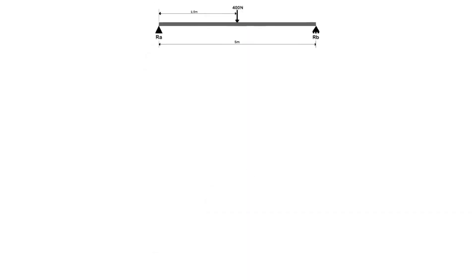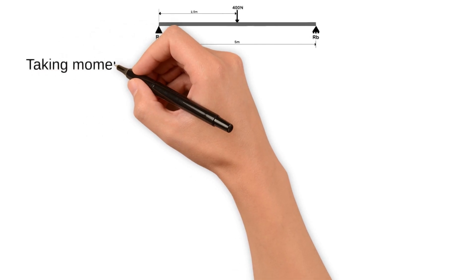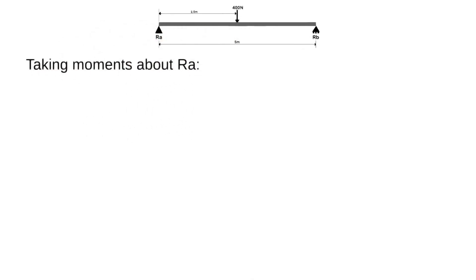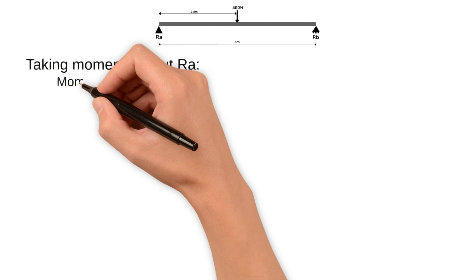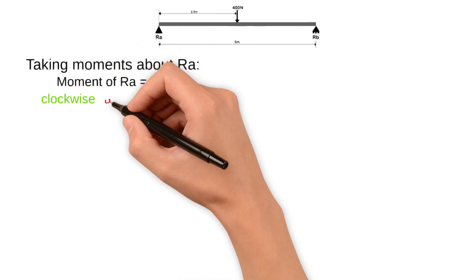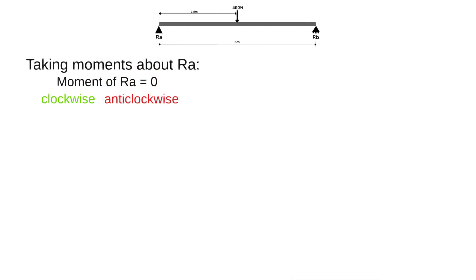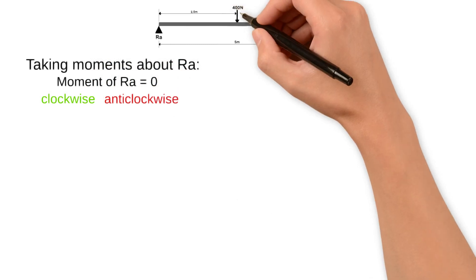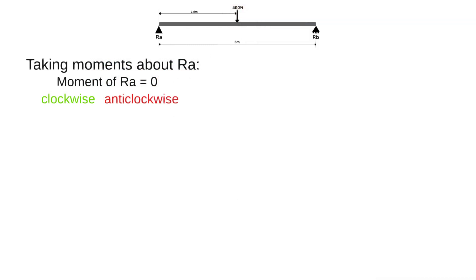To determine the support reactions we will use the method of moments. We begin by taking moments about point RA. Since the distance of the reaction force at RA is zero, the moment of RA must also be zero. The only clockwise moment we have is caused by the 400 newton load at a distance of 2.5 metres.